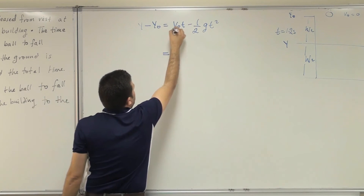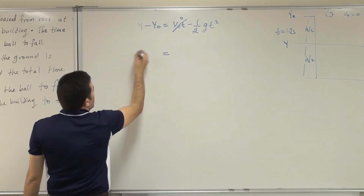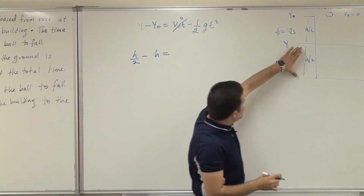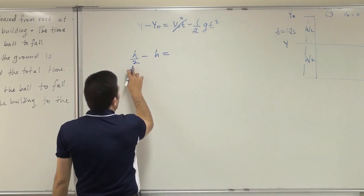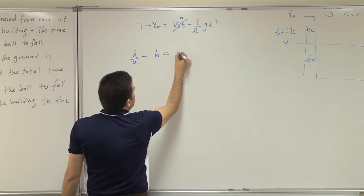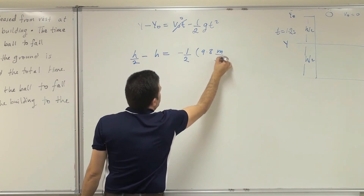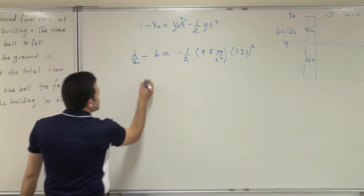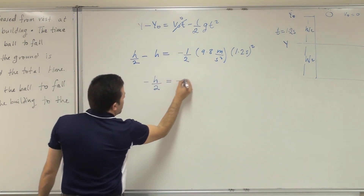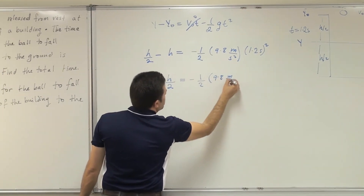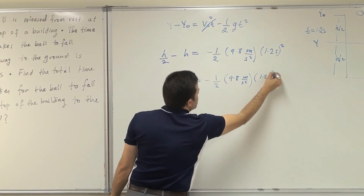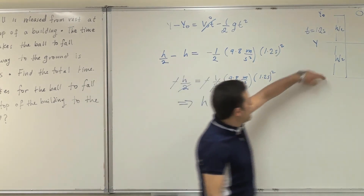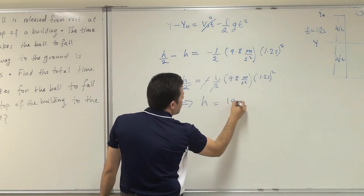The initial speed is zero. y naught is h and y at halfway is h over 2. So h over 2 minus h equals minus half times 9.8 meters per second squared times 1.2 seconds squared. This gives minus h over 2 equals minus half times 9.8 times 1.44. Canceling the negatives, h equals 14.1 meters — the total height of the building.